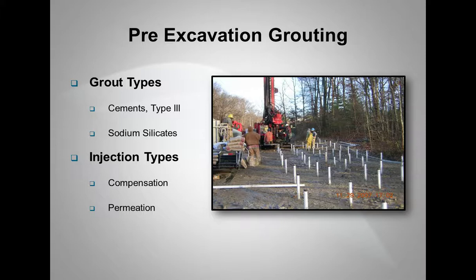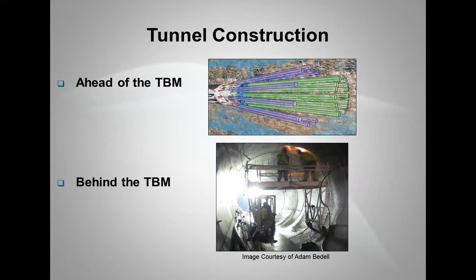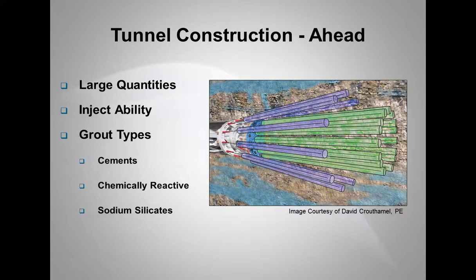Injection types are compensation grouting or permeation grouting. Tunnel construction, this is during the TBM. There's two aspects here, either ahead of the TBM or behind the TBM. Ahead of the TBM, generally, again, these are large quantities. You can see that this is grouting out in front of the face. They're trying to stabilize or control groundwater prior to mining through those sections. Grout type is generally used is a Type III cement or an ultrafine cement. In special circumstances, a chemically reactive can be used, the acrylics or the acrylates. Sodium silicates do get used in pretty predominant situations as well when grouting out in front of the TBM.